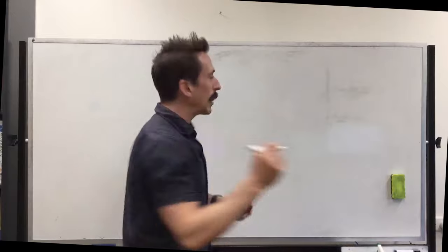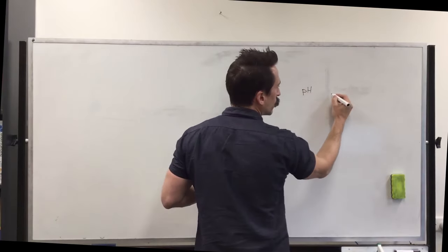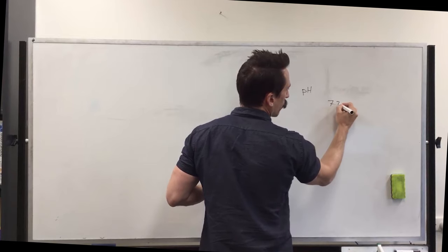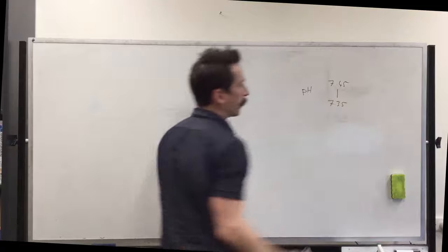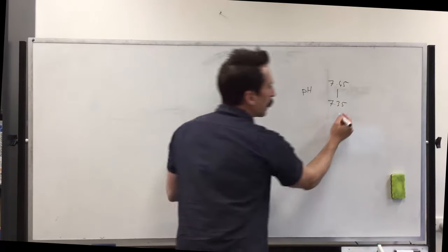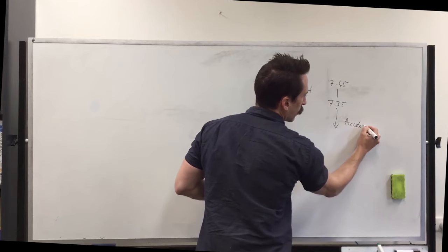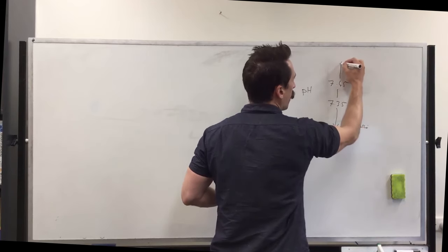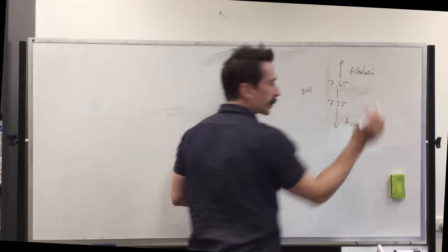So like I said before, your blood pH needs to sit between the range of 7.35 and 7.45. That's the range that needs to sit within. If it goes below this particular range, acidosis. If it goes above this particular range, alkalosis. That's the first point.